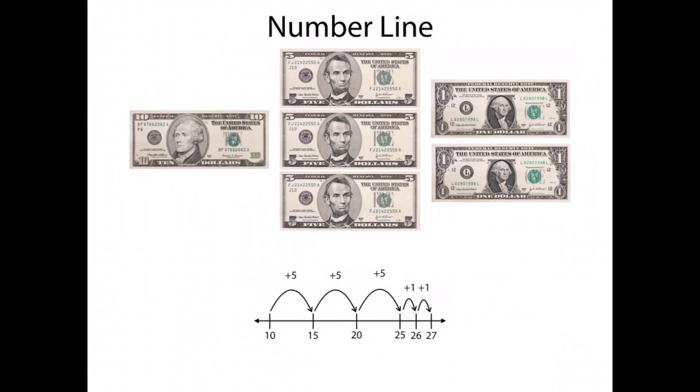We could use a number line. Starting with 10, our highest value, doing 3 jumps of 5, getting to 25. 2 jumps of 1 to be $27.